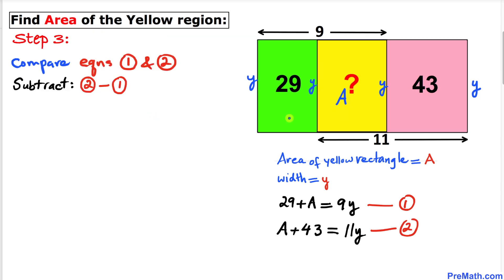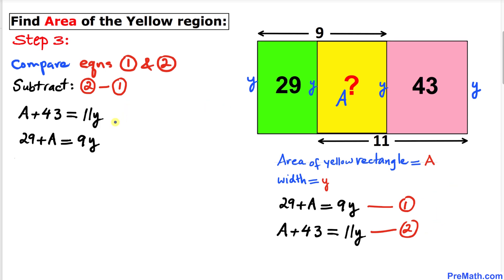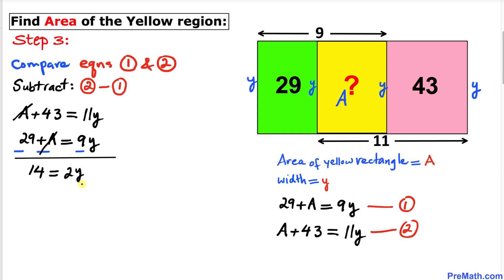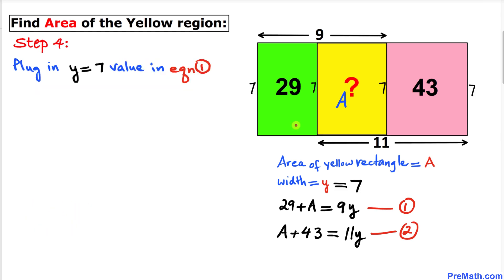In this next step, let's subtract equation one from equation two. Changing the signs and subtracting: the A terms cancel out, and 43 minus 29 gives us 14, equal to 2y. Dividing both sides by 2 to isolate y, we find that y equals 7 units.